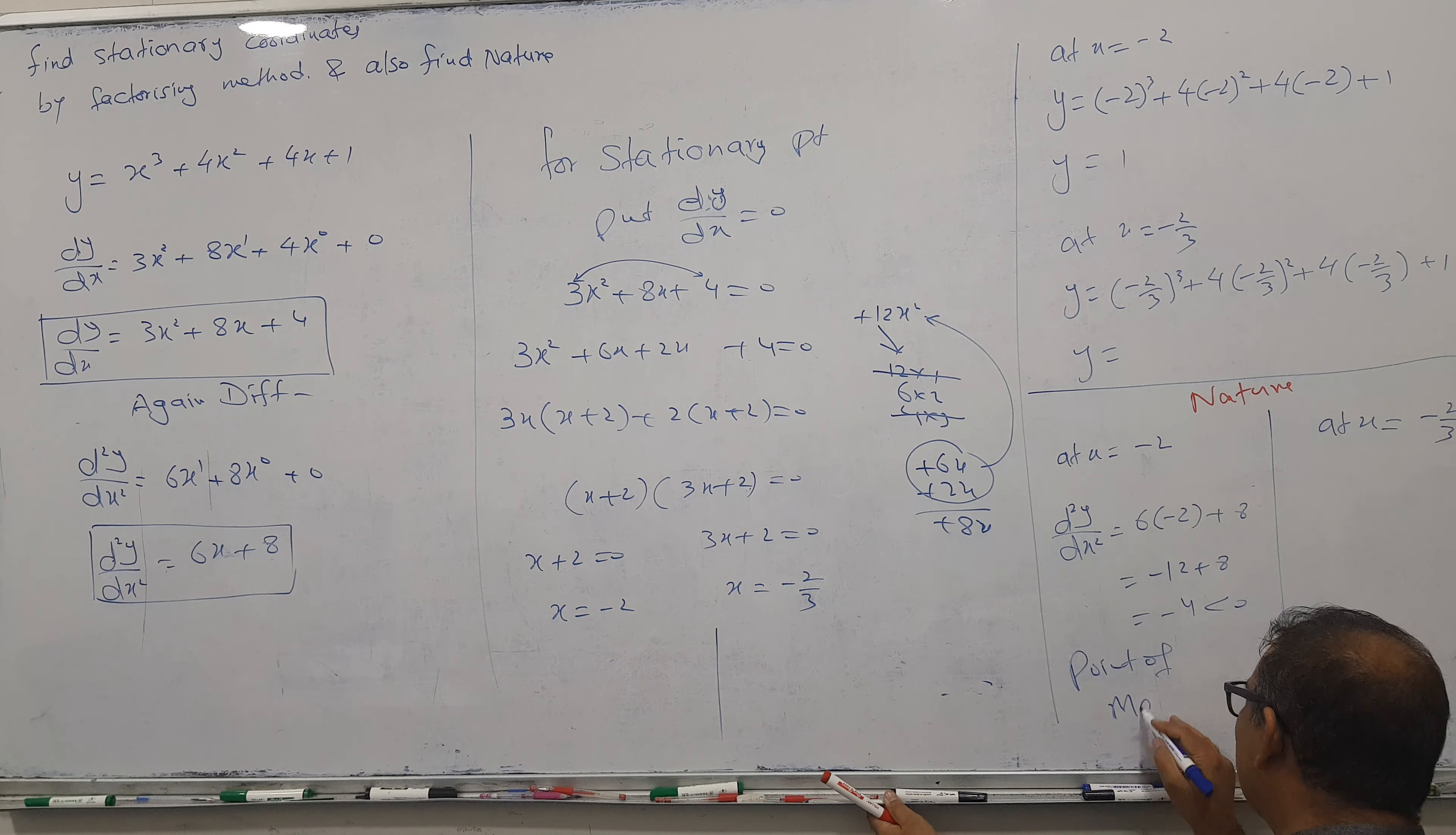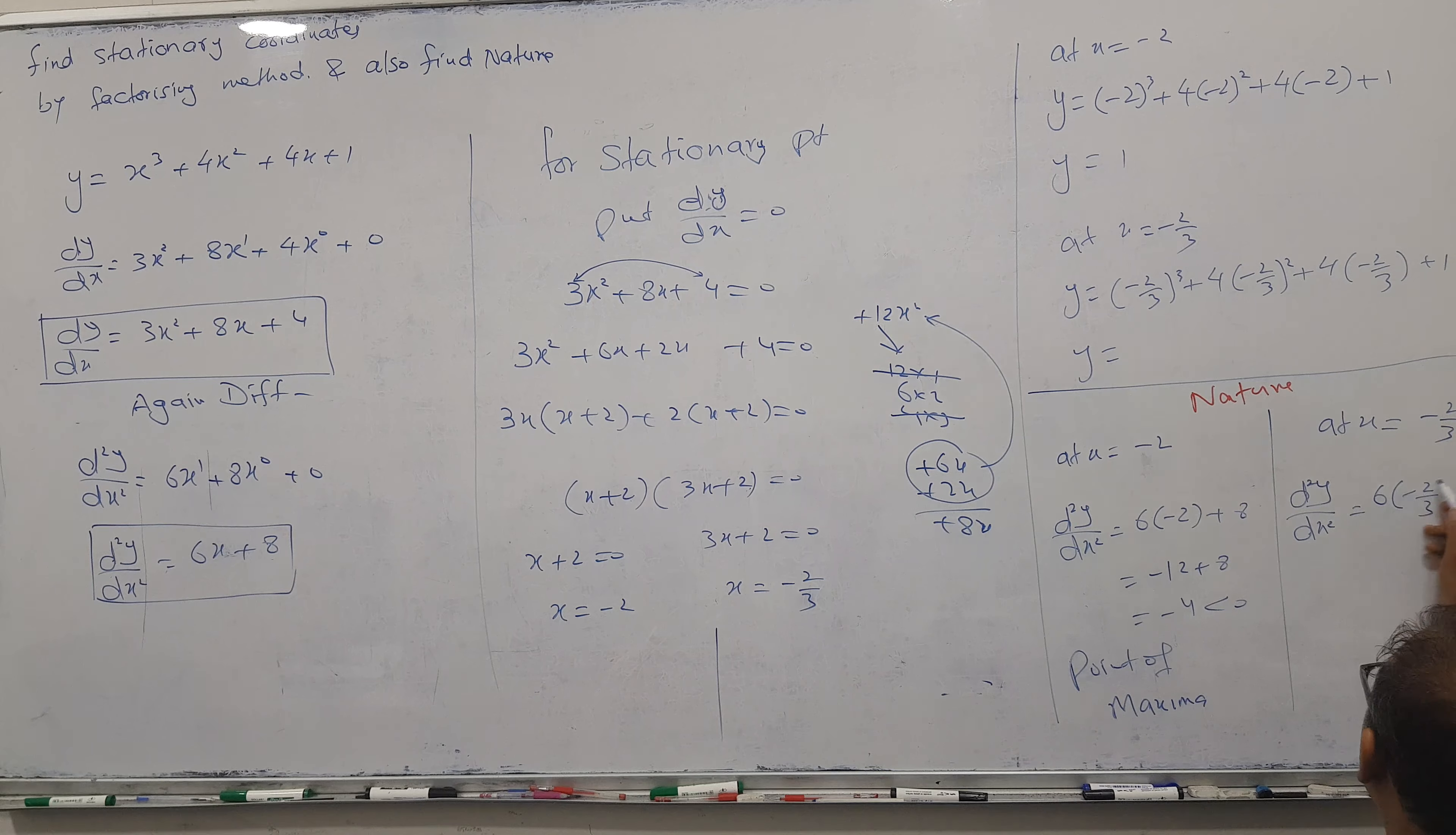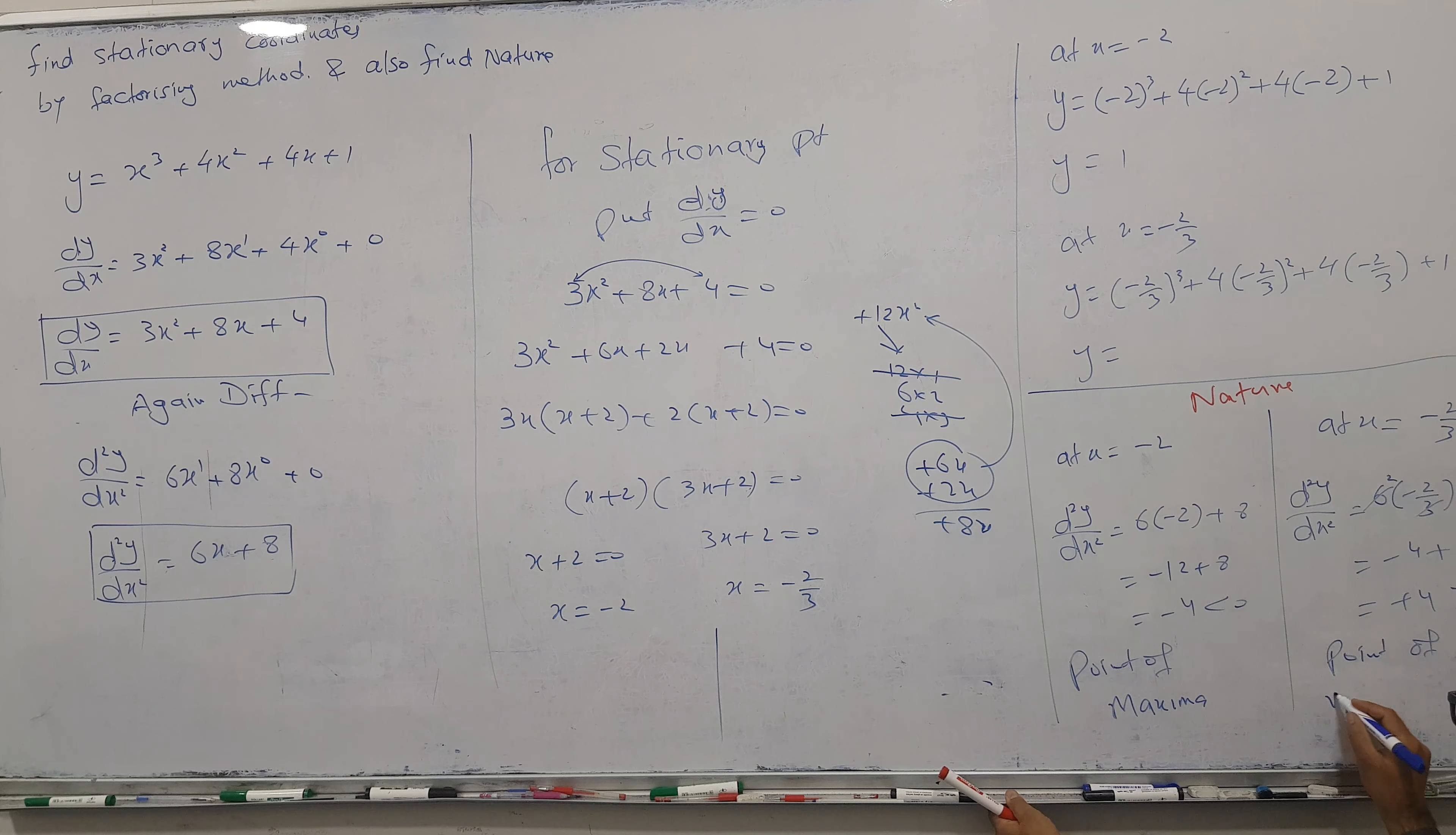Now at x = -2/3, put this in second differentiation. 6(-2/3) + 8 = -4 + 8 = +4. It's positive, so point of minima at (-2/3, -5/27).